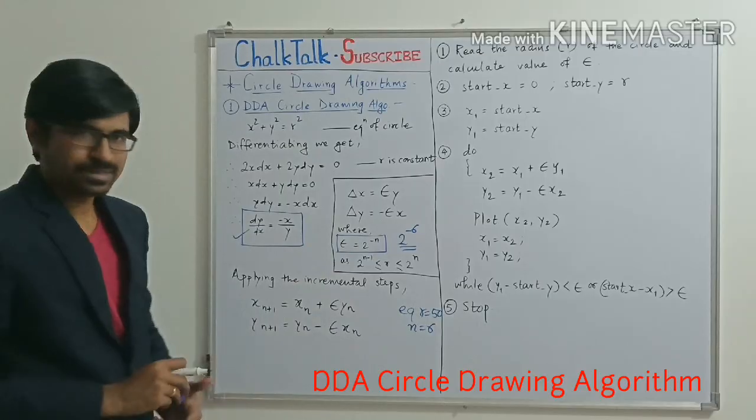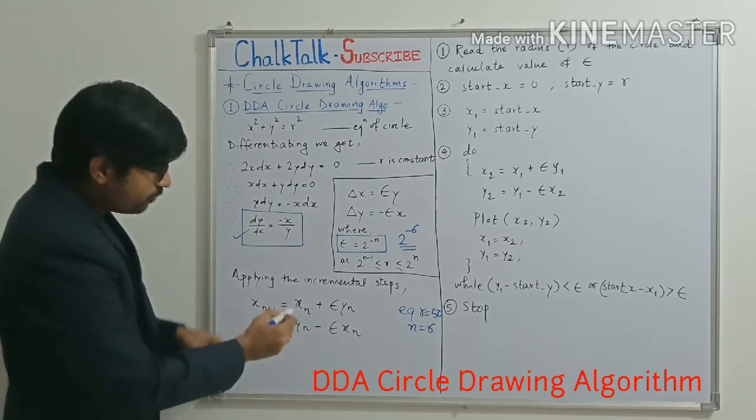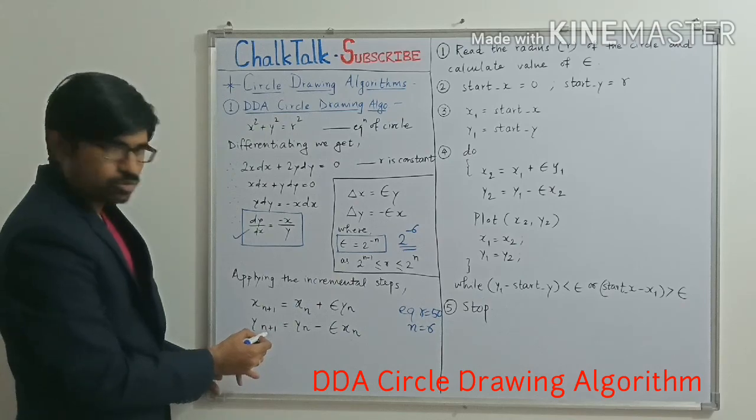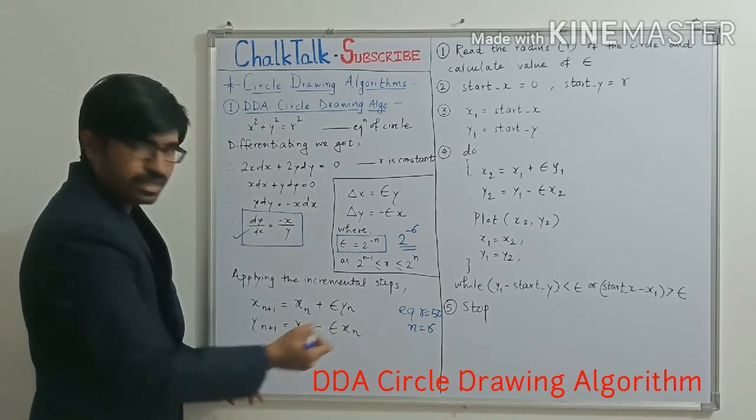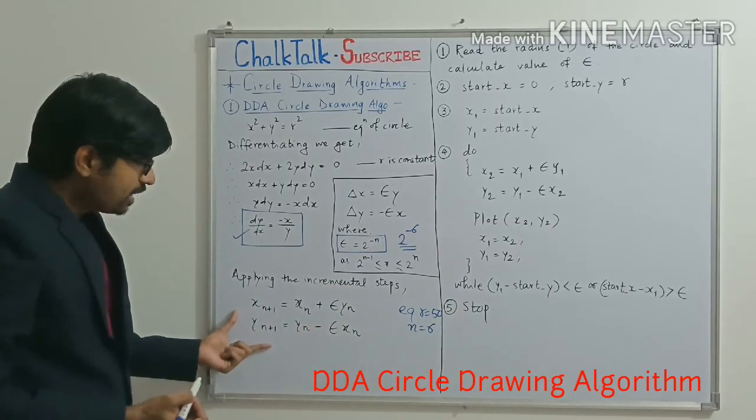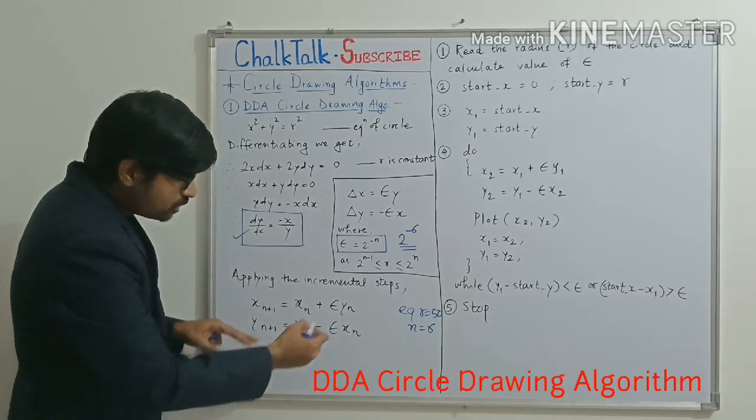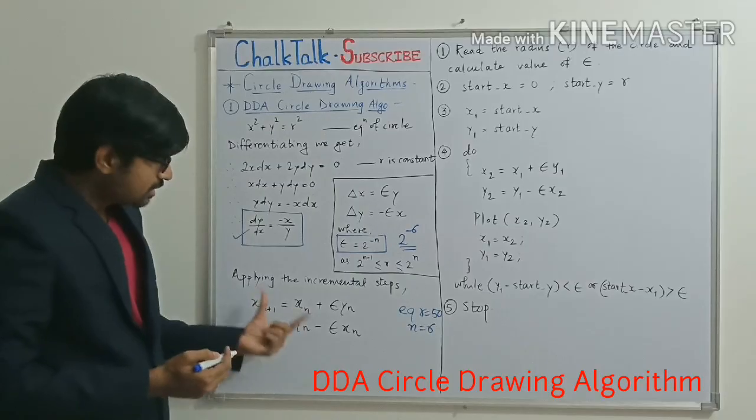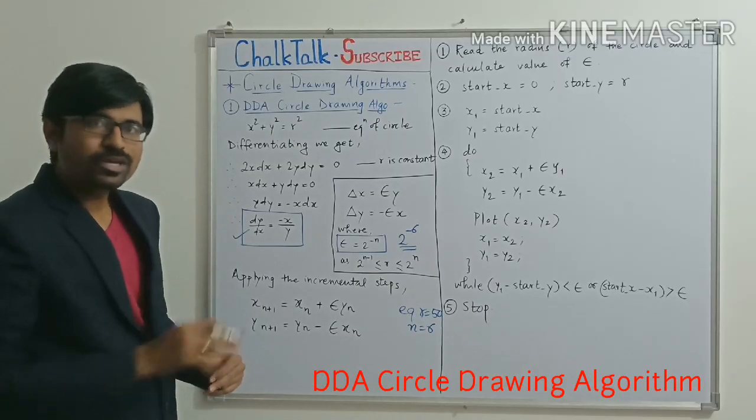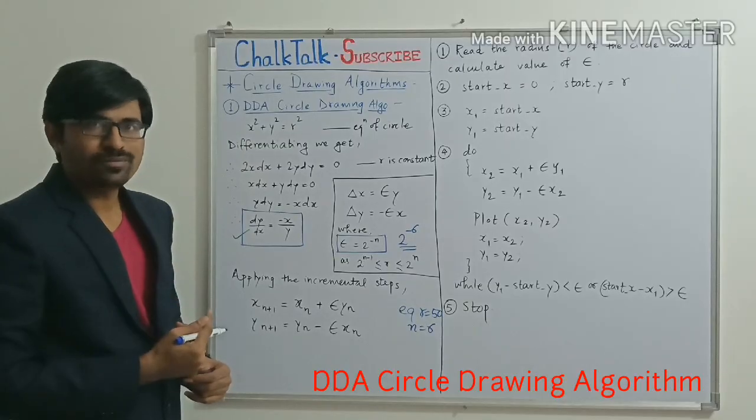Now moving to the incremental steps, the equation of x(n+1) means current pixel plus new pixel will be old pixel plus epsilon, that is incremental factor multiplied with y(n). And for y(n+1), it will be y(n) - epsilon × x(n). So this epsilon value calculation will be utilized here. And according to that, you will get the new equations. But with these equations, the problem is, if I substitute the values of x(n), y(n) or epsilon to this, this equation will not give me circle. It will actually give me a spiral type of diagram.